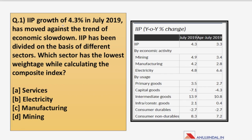The first question: IIP growth of 4.3% in July 2019 has moved against the trend of economic slowdown. IIP has been divided on the basis of different sectors — which sector has the lowest weightage while calculating the composite index? Four options are given for answering the question.